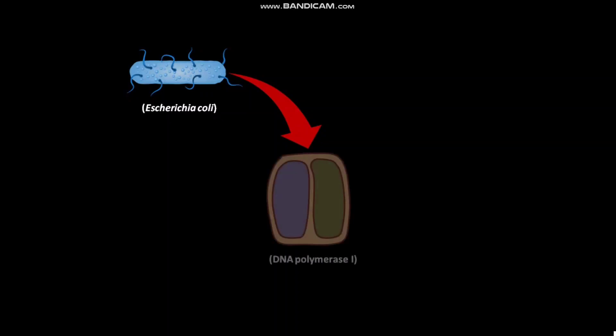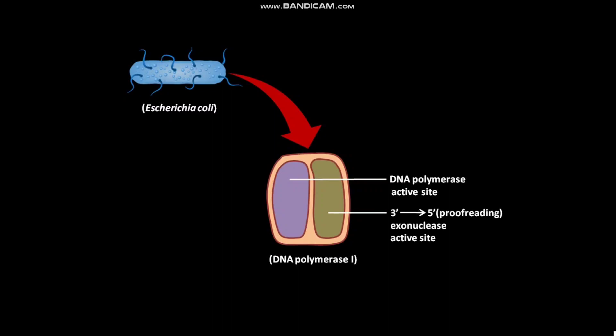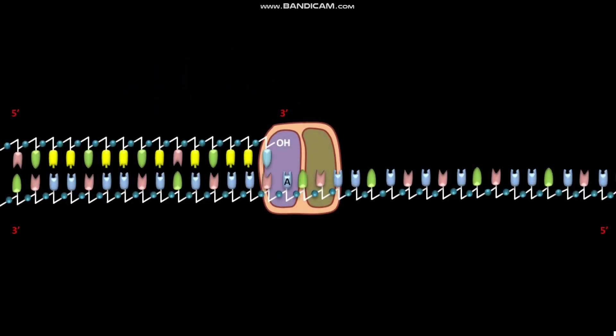The bacterium E. coli has an enzyme called DNA Polymerase 1. DNA Polymerase 1 has a DNA polymerase active site and a 3' to 5' proofreading exonuclease active site. During DNA replication, DNA Polymerase 1 shows its polymerization activity in the 5' to 3' direction.